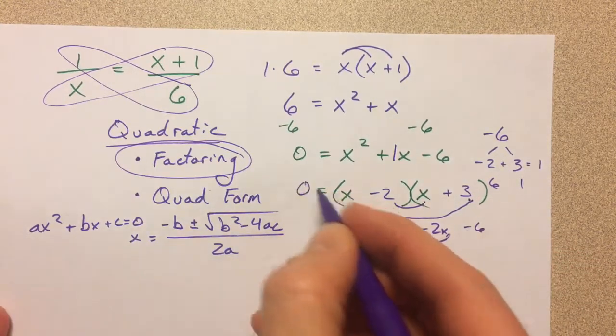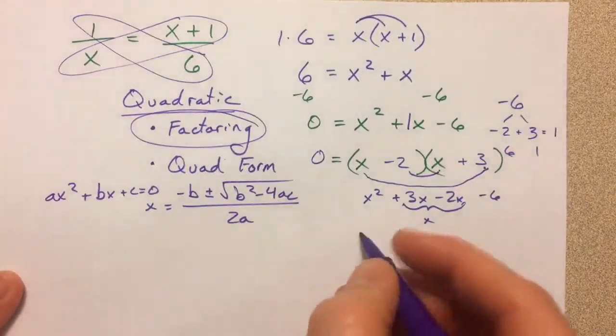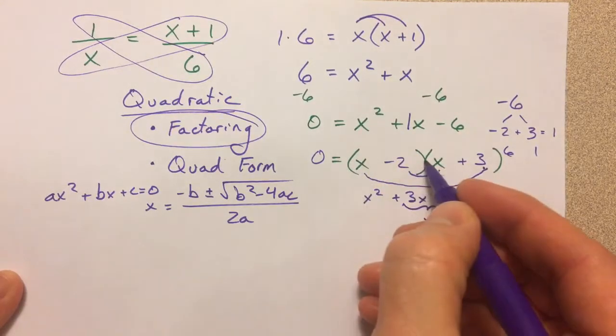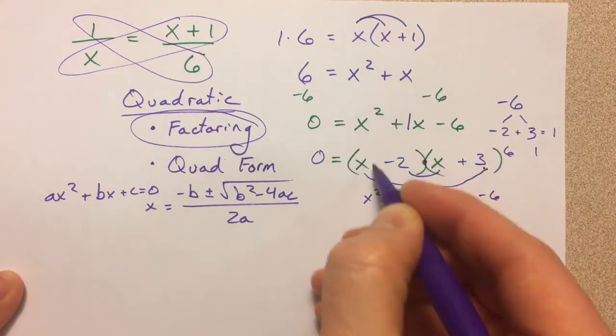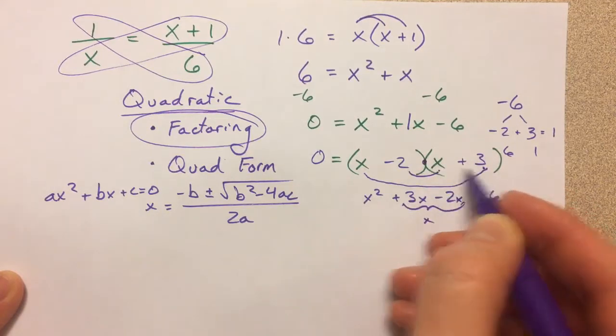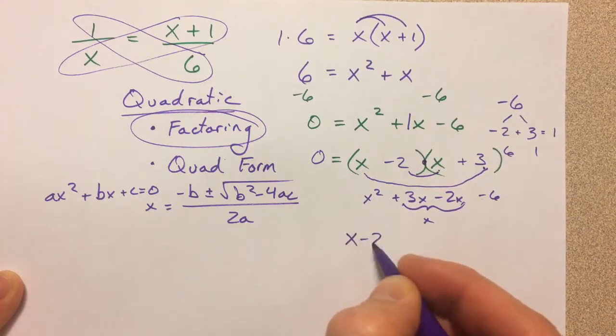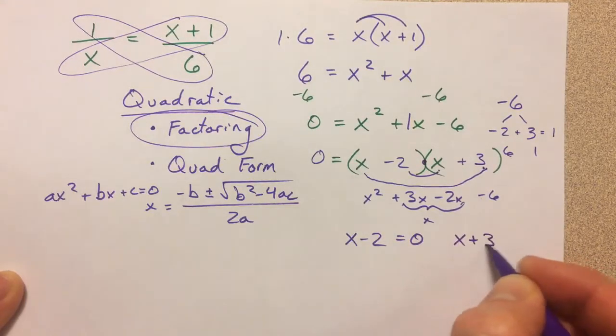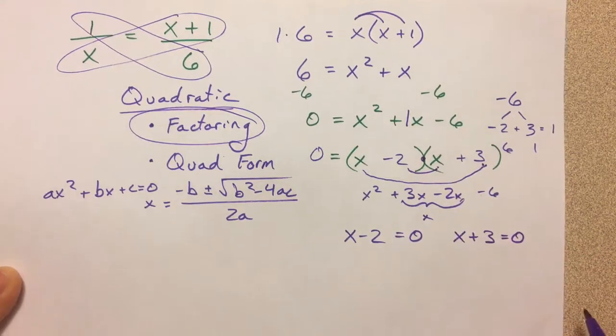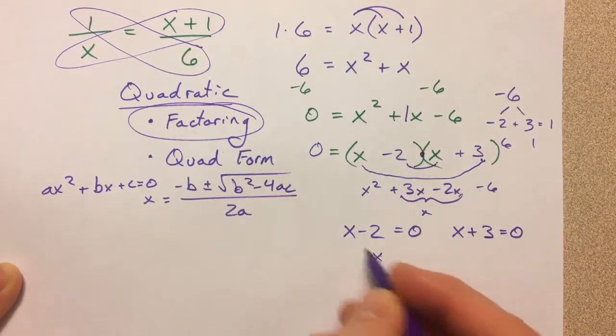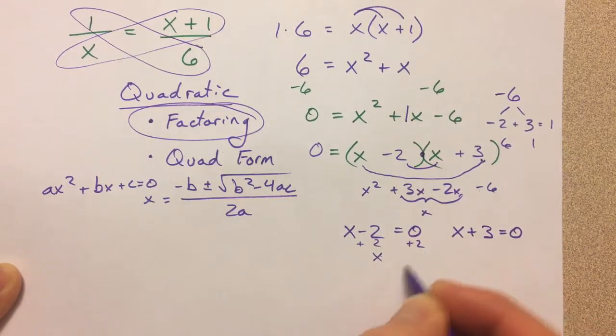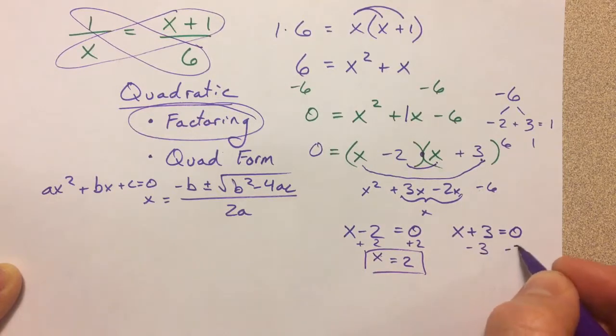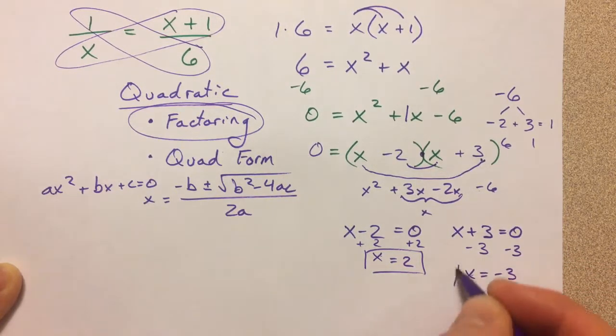So here's where the magic is with factoring. Either one of these two numbers has to equal 0, because one number times another number equals 0. So either x minus 2 equals 0, or x plus 3 equals 0. And so then I can just add my 2 over, and x equals 2. Or I can subtract my 3 over, and x equals negative 3.